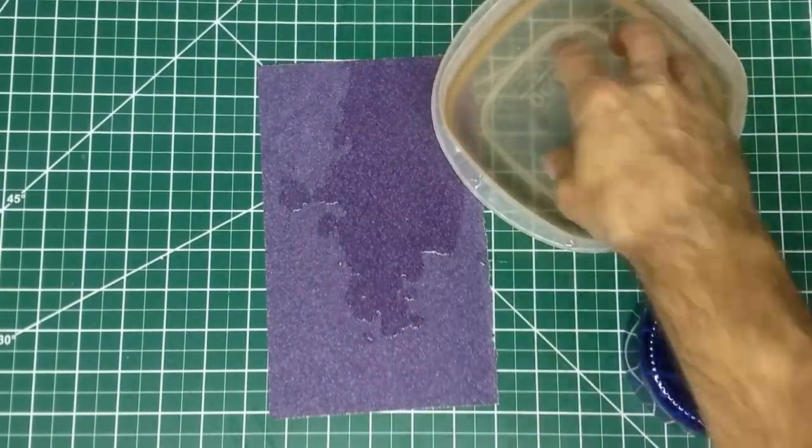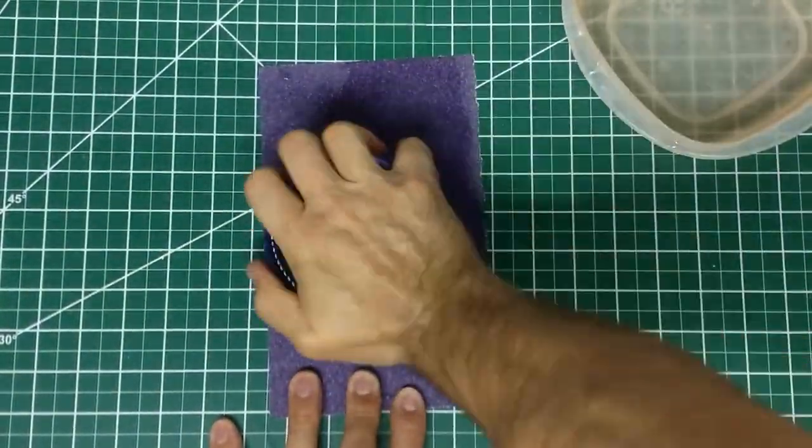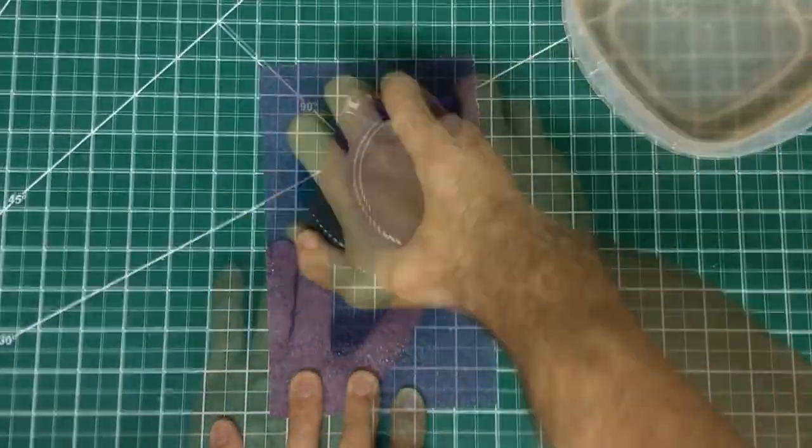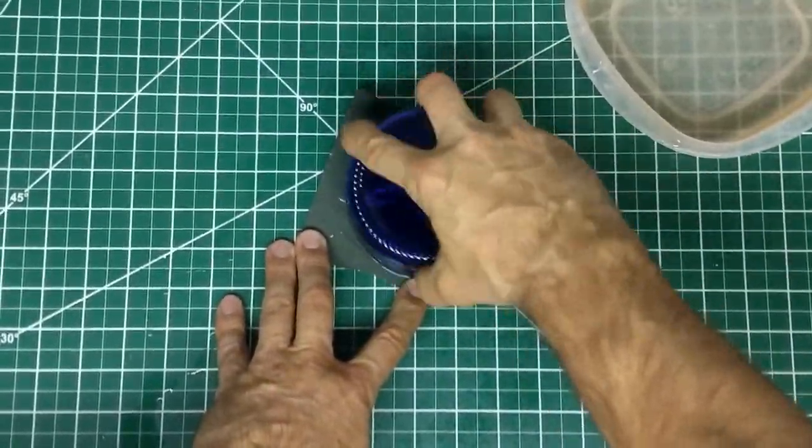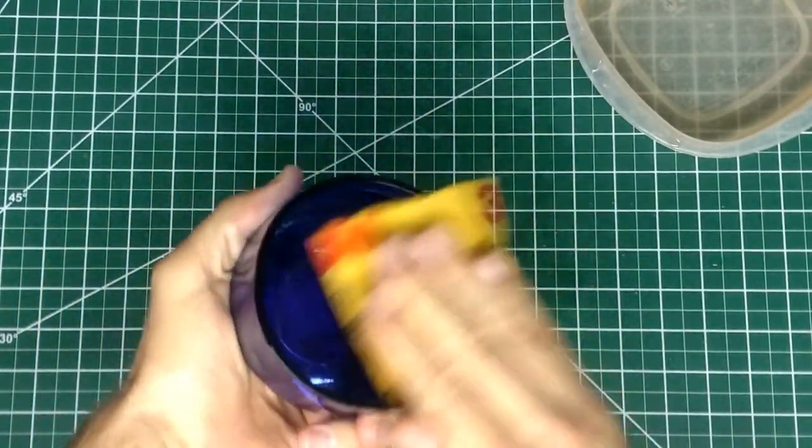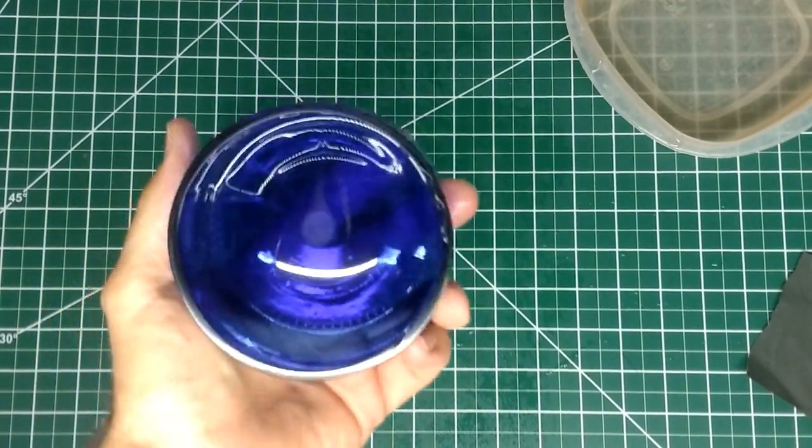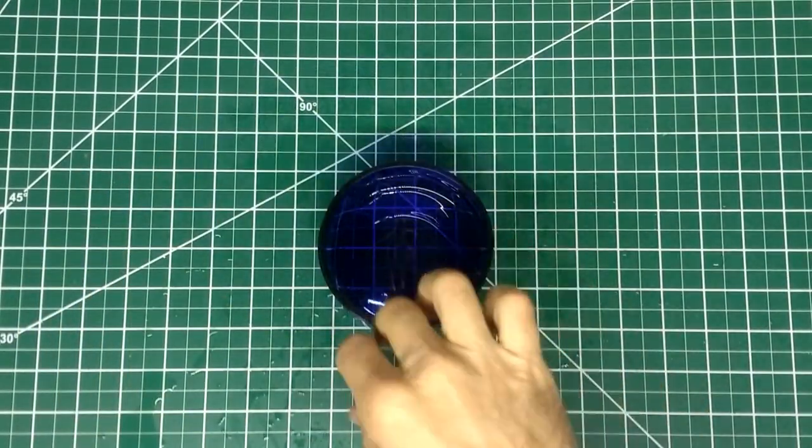Next, I'll sand the edges smooth using various grits of sandpaper. After finishing with 2000 grit, I check the results. It looks good, so now I clean up a bit.